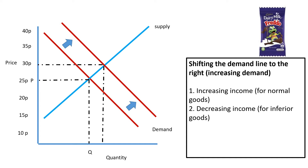If we have decreasing income, we're talking about inferior goods — things we buy when we have less money. So if I have less money, I might buy more own-brand goods, or go to Poundland more. So if the population has a decreasing income, we might increase demand for some goods. If you've got an inferior good, look for decreasing income; if you've got a normal good, look for increasing income.